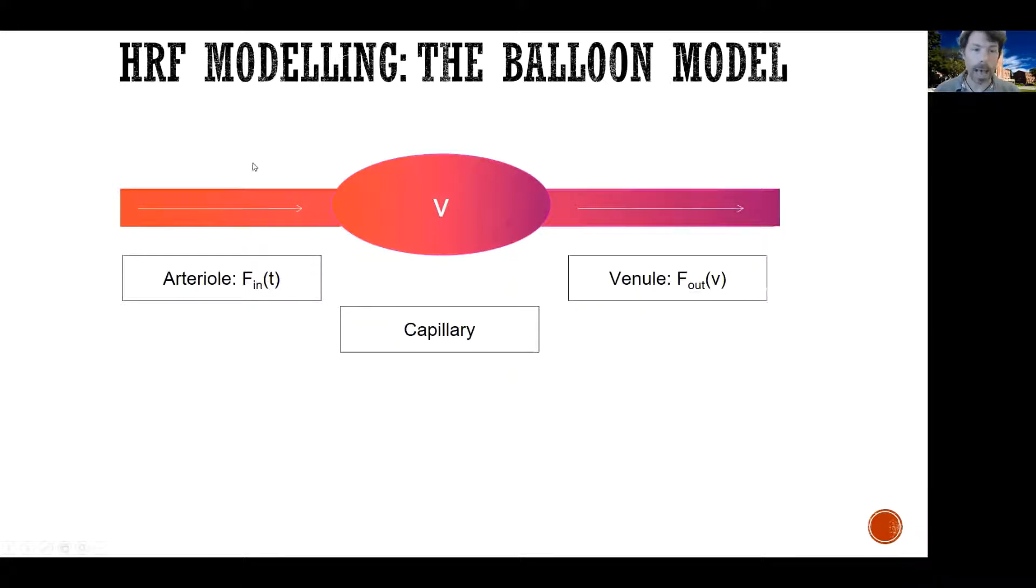There's the arterial side, the feeding arterial side, there's a capillary. The capillary is half arterial blood and half venous blood, and then there's the draining vein.